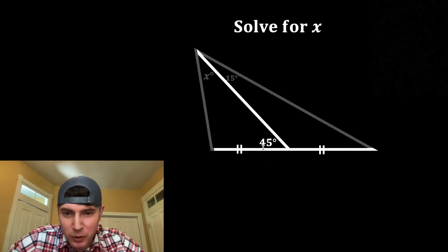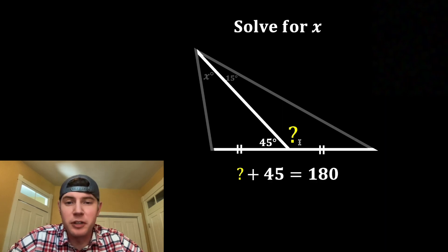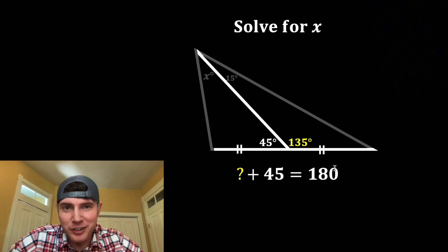For the first step, let's focus on this linear pair right here. I want to find out what is this other angle. Combined these form 180 degrees, so we know that the question mark plus 45 will equal 180. That'll be true if the question mark is 135, so we know that this angle is 135 degrees.